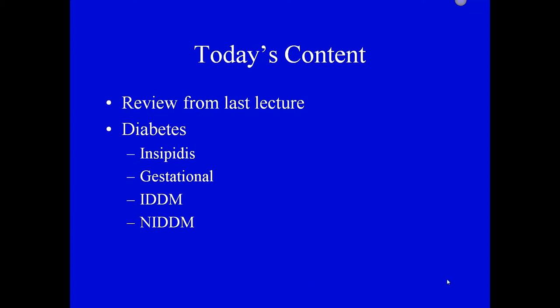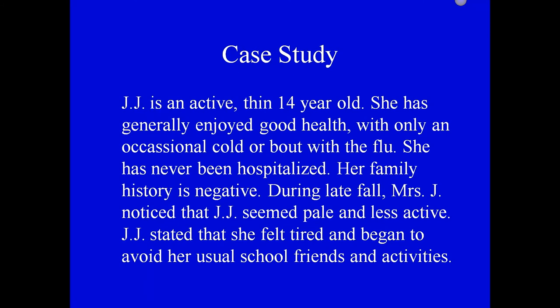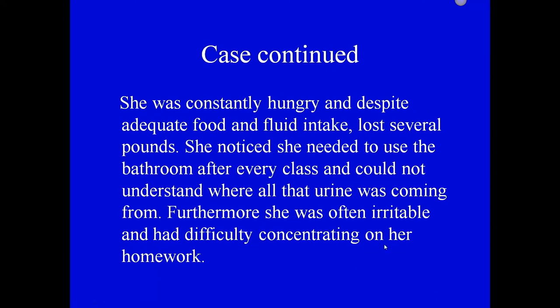We'll talk about four types of diabetes. As usual, we start with some sort of case study or review. As you read through this, pick out things that help us know there's something wrong with JJ. It looks like she's been very healthy; however, now she seems pale and has a decreased activity level. JJ herself says she feels tired, and she's begun to avoid her usual school friends and activities.